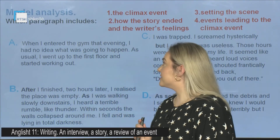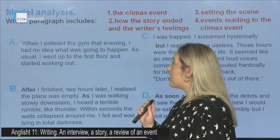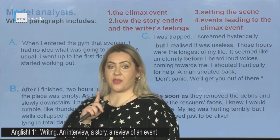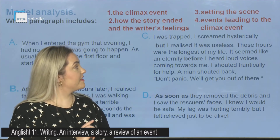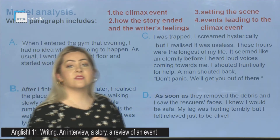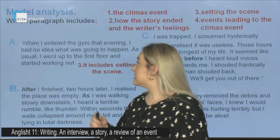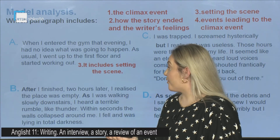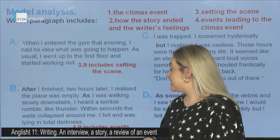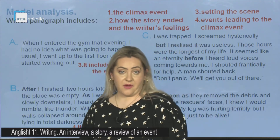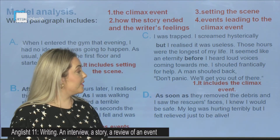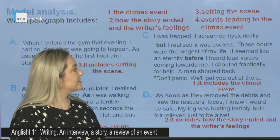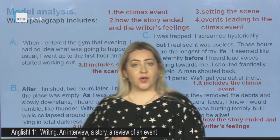Now, in this text, you should find which paragraph includes: 1. The climax event. 2. How the story ended and the writer's feelings. 3. Setting the scene. 4. Events leading to the climax event. Paragraph A includes setting the scene — it's the first paragraph. The second paragraph includes events leading to the climax event. Paragraph three includes the climax event. And the last paragraph includes how the story ended and the writer's feelings. Could you identify them?